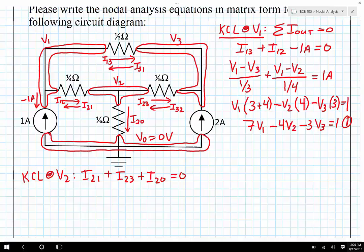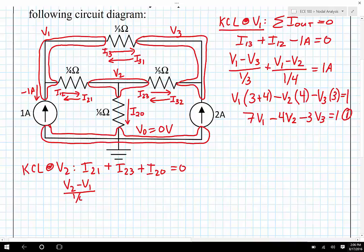I sub 2,1, that's V2 minus V1 divided by the resistance between them, which is one quarter of an ohm, one quarter, plus V2 minus V3 divided by, and that would be one fifth of an ohm, plus V2 minus V0 divided by one sixth of an ohm, and that sums up to zero. We know that V0 is just zero, so that can go away.